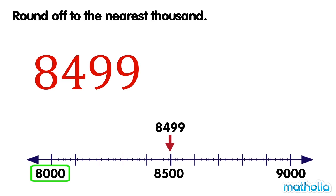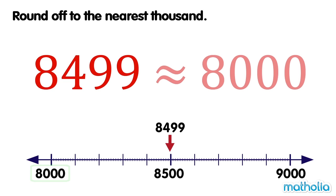To the nearest thousand, 8,499 is approximately equal to 8,000.